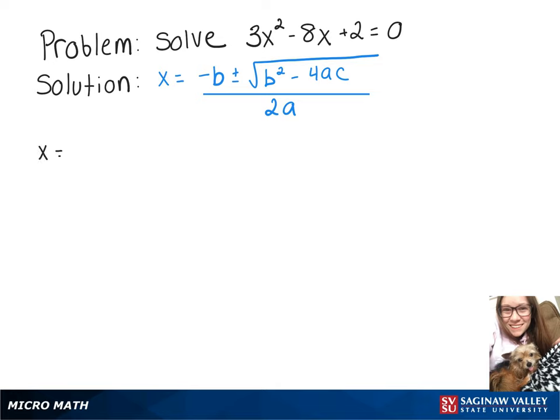So we're going to do x equals positive 8 plus or minus the square root of negative 8 squared minus 4 times 3 times 2 over 2 times 3.